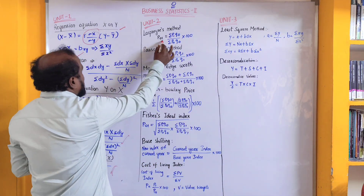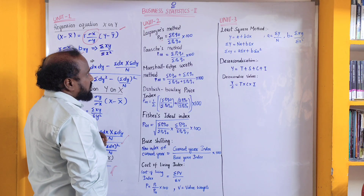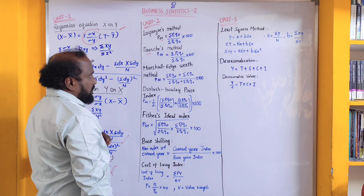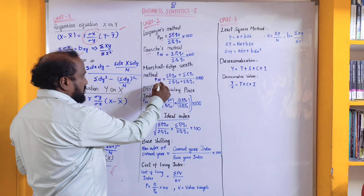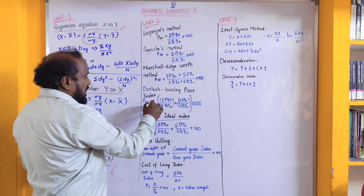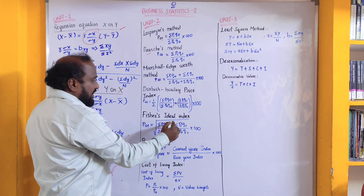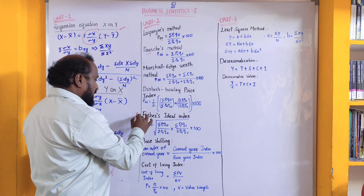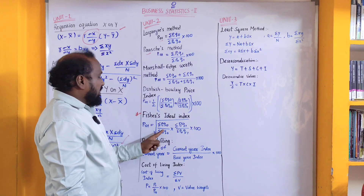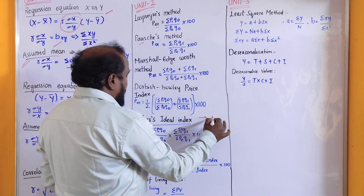Unit number two — index numbers. The price index from base year to current year is equal to sigma P1-Q0 divided by sigma P0-Q0, into 100. This is Paasche's index: P1-Q1 by P0-Q1. Marshall-Edgeworth is the combination of Laspeyre's and Paasche's. Dorbish-Bowley is half of Laspeyre's and Paasche's. Fisher's ideal index number is very important: P01 is equal to root of Laspeyre's into Paasche's.